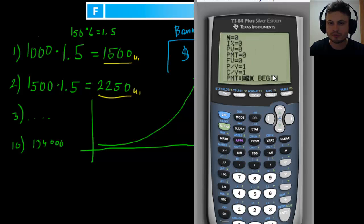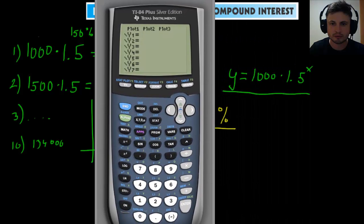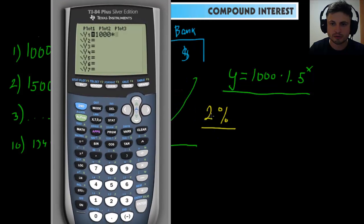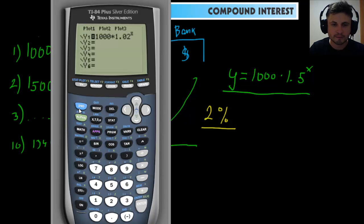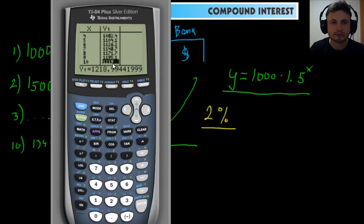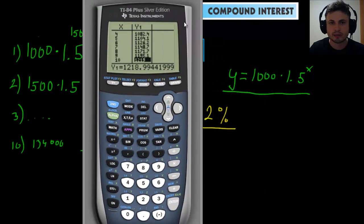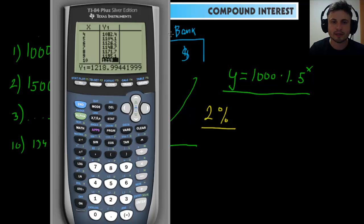The finance app uses the TVM Solver with various acronyms that can be confusing, so it's easier to do it manually. Go into the Y function and type: 1000 × 1.02^x. Plot it and look in the table for the value at x = 10. After ten years the value is $1,219 — only about $1,200 — because banks currently don't offer high interest rates. Still, compound interest is very useful for calculating returns from various investments.